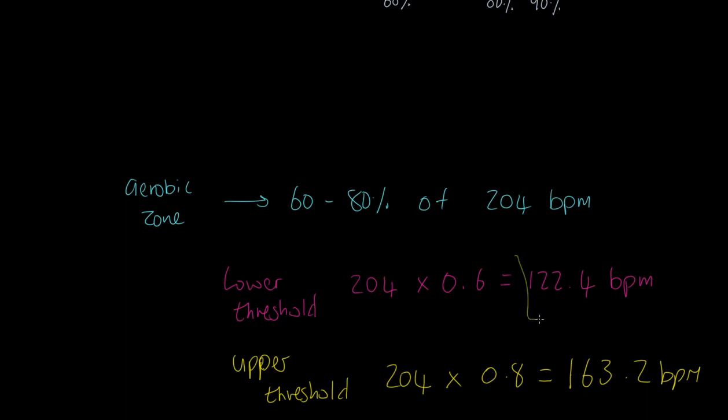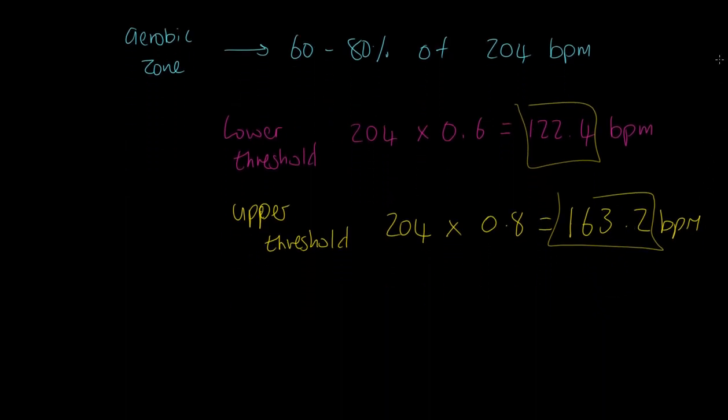So if you wanted to engage in aerobic development, you would have to do work between these two values, between 122 and 163.2. Now there's a couple of ways of actually measuring that. Heart rate monitors, a good one. Lots of gym devices actually measure the heart rate for you. There's all kinds of things like MyZone, all kind of stuff, but that is a really useful way of doing it. The only thing I would add to that is of course you might want to calculate your anaerobic zone.